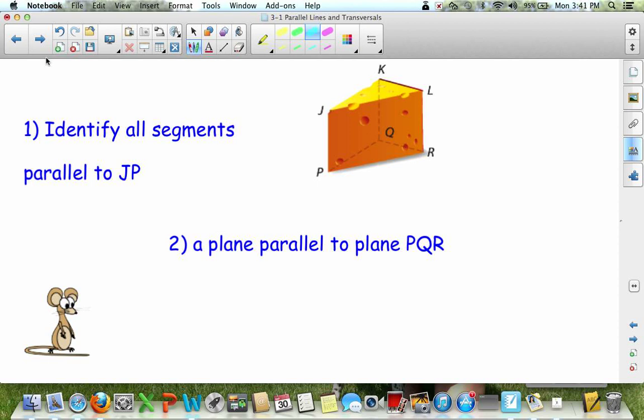So looking at this picture of this slice of cheese, identify all segments parallel to JP. So I want you guys to pause the video at this time and find all the lines parallel to JP.